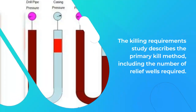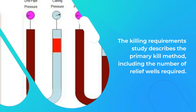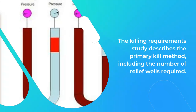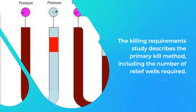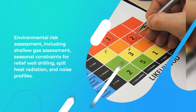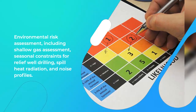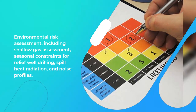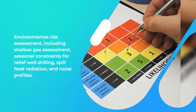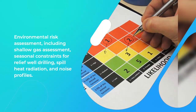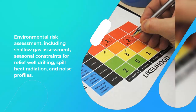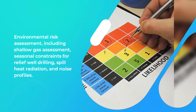The killing requirements study describes the primary kill method, including the number of relief wells required. It also covers environmental risk assessment, including shallow gas assessment, seasonal constraints for relief well drilling, spill heat radiation, and noise profile.